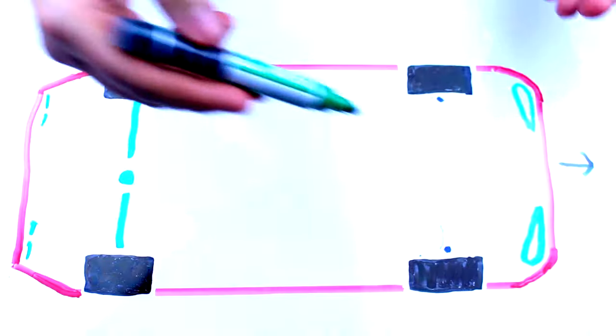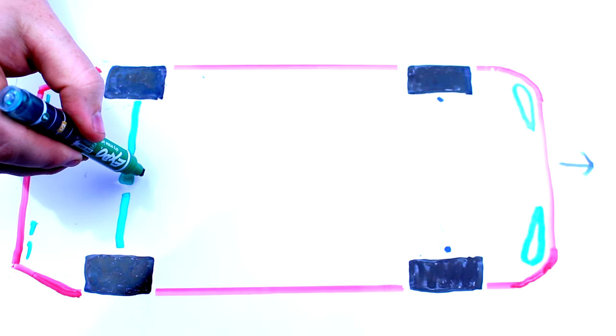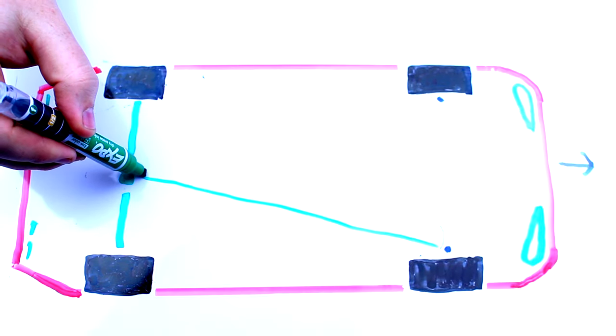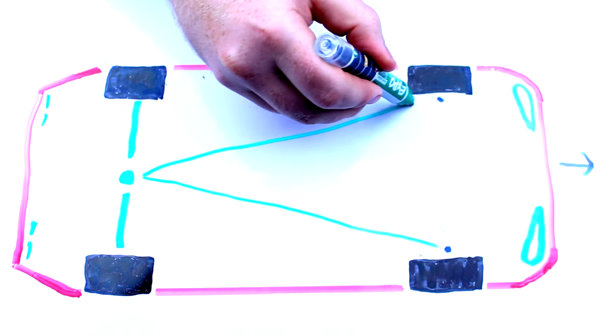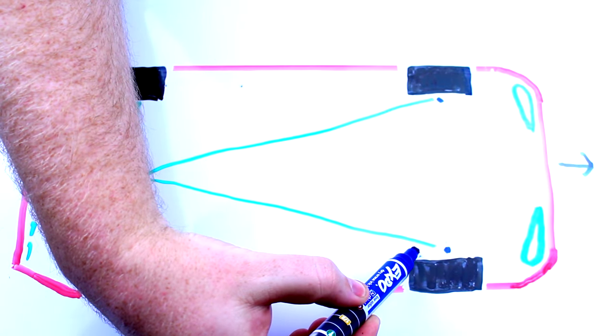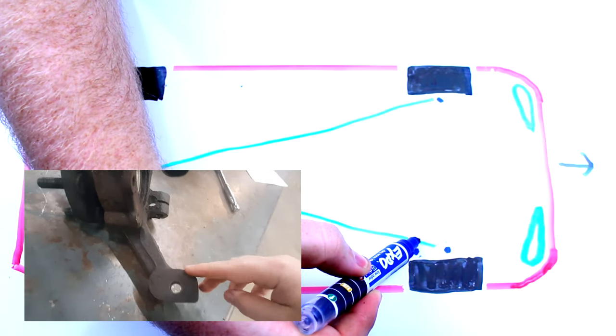What we really want is for everything to pivot based on Ackermann steering principles. So we drew these imaginary lines from the center of the rear axle to where the steering pivots on the ball joint. With that information instead of having where the tie rod end pivots we'll move it inward to right here.